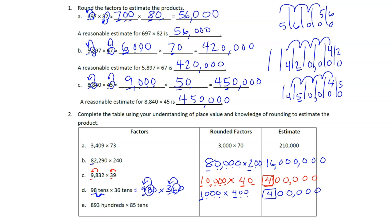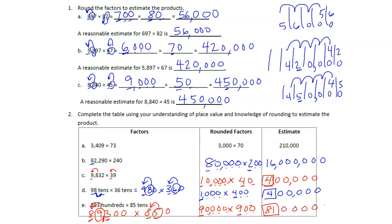For (e), we have 893 hundreds times 85 tens. 893 hundreds is 89,300 and 85 tens is 850. Rounding 89,300 to the nearest ten-thousand — the control number nine rounds it up to 90,000. Rounding 850 to the nearest hundred — control number five rounds it up to 900. Nine times nine is 81, and multiplying by ten six times gives us 81,000,000 — eighty-one million.